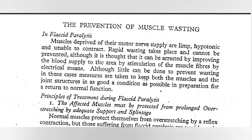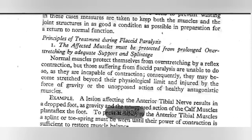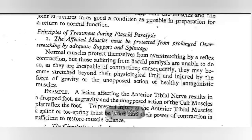Let's see the treatment of flaccid paralysis. In flaccid paralysis, we will see the different principles — we have 5 principles. The first principle: the affected muscles must be protected from prolonged overstretching by adequate support or splinting. We will protect the affected muscles so that they will not stretch.